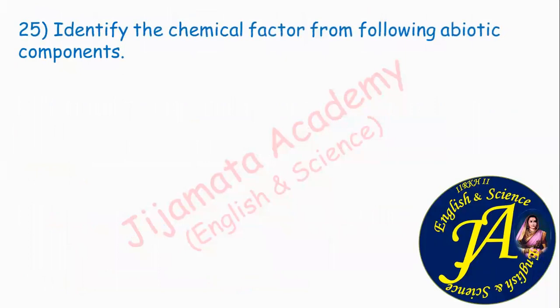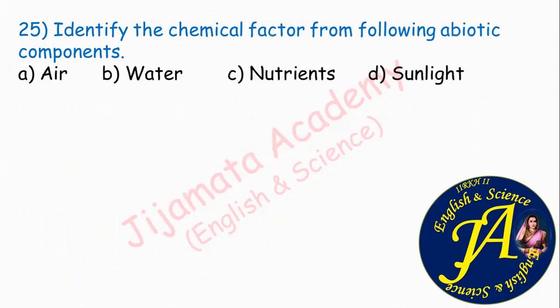Identify the chemical factor from the following abiotic components. Options are air, water, nutrients, and sunlight. Option C is correct: nutrients are chemical, organic abiotic factors. Air, water, and sunlight are physical abiotic components. Chemical abiotic factors are of two types: organic and inorganic — nutrients are organic abiotic factors.